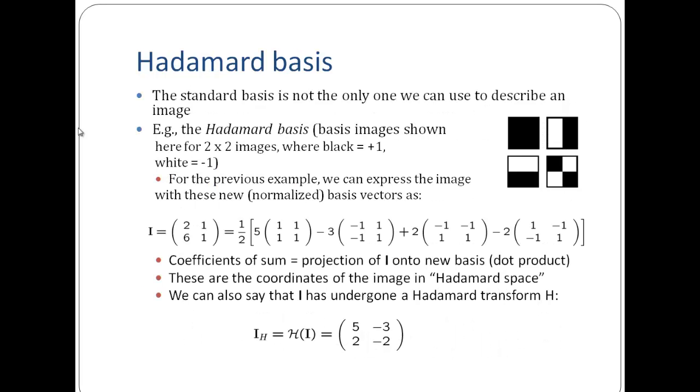Now, with an extension to this, we have a Hadamard basis. So the standard basis is not the only one which can be used to describe the image. We can have a basis which is shown like this, wherein my black is represented as plus 1, white is represented as minus 1. So I know this will be represented as a combination of all 1s, because there are 4 1s here. Minus 1, 1, minus 1, 1. This would be minus 1, minus 1, 1, 1. And this would be 1, minus 1, minus 1, 1.